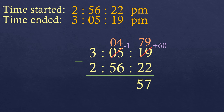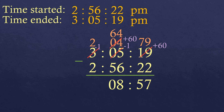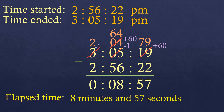For the minutes: 4 minus 56 is not possible because the number on top is smaller, so we borrow from the hours. Keep in mind that one hour is 60 minutes. We subtract 1 from the hours and add 60 minutes. So 3 becomes 2, and 4 becomes 64. Now: 64 minus 56 is 8, and for hours 2 minus 2 is 0. The elapsed time is 8 minutes and 57 seconds.